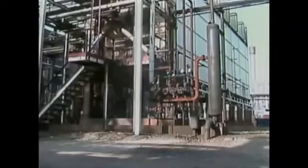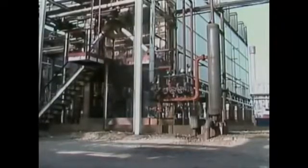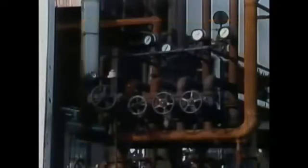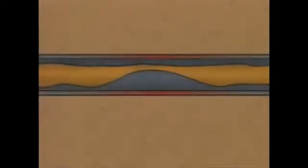Adjusting flow rates and firing rates are short-term solutions. They'll let you keep the furnace going temporarily until the problem can be fixed. But if there is a lot of coke built up in a tube, it should be removed. Many furnaces have decoking systems to remove the buildup from the tubes. This system injects steam and air through the tubes to remove the coke deposits and carry them out.